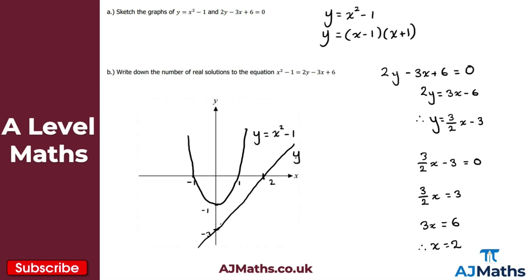So that straight line is 2y minus 3x plus 6 equals 0. We've got our quadratic curve and our straight line both sketched. That's our solution to part A.